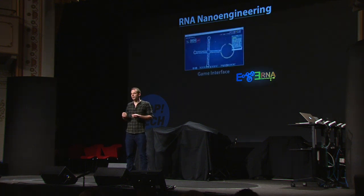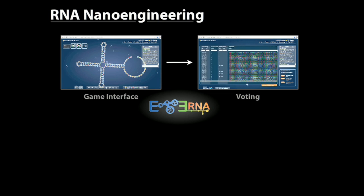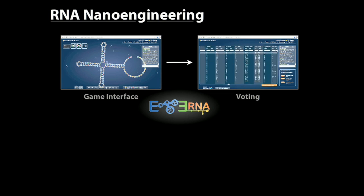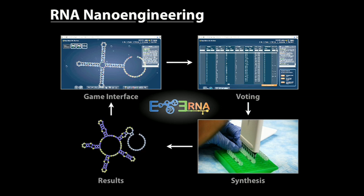The way Eterna works is that players design RNAs on their computers. But it doesn't just end with computers. Every week, players vote for which RNAs they think are going to be most successful. Then my wonderful colleagues at Stanford actually synthesize the top-player RNAs every week and send back the results to players as scores and visual results. This is a radical new concept for what a game is, built around high-throughput experimental science.